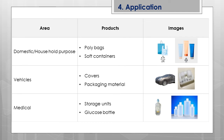Based on its advantages, LDPE is used in various applications. For domestic and household purposes, it is used in poly bags and soft containers — most poly bags are LDPE material. Soft containers like shampoo bottles are also made from LDPE. In vehicles, it is used in covers and packaging material. In the medical field, it is used for storage units and glucose bottles, where its good chemical resistance and softness are important.